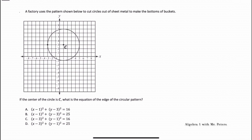Our first problem is asking us to write the equation of a circle. We need to know that the equation of a circle takes the format (x - h)² + (y - k)² = r². Let's start by identifying the center of the circle, which is (1, 3), and the radius. Counting the radius: 1, 2, 3, 4. So the radius is 4, and when we square it, that equals 16.